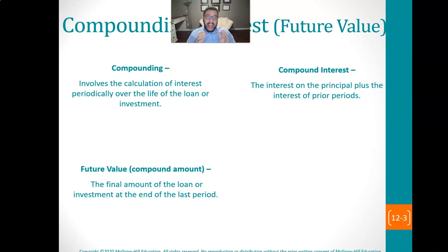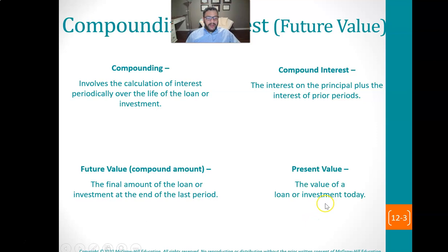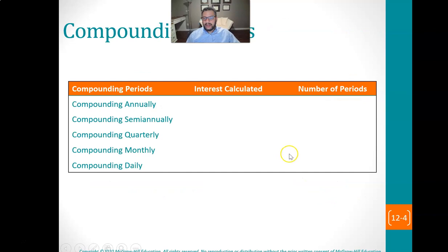This will become clear when you start to answer the questions. They'll say something like, what is the value of this in five years or in 20 years? We also have present value — the value of a loan or investment today. If we know what something is in the future, we want to know what we need today in order to get that.